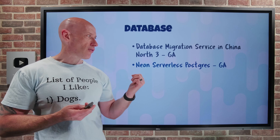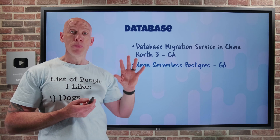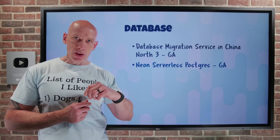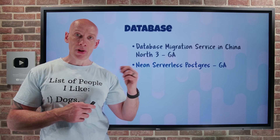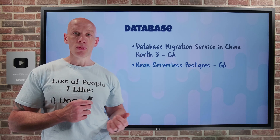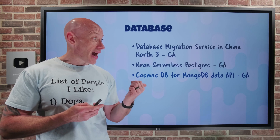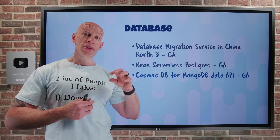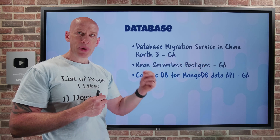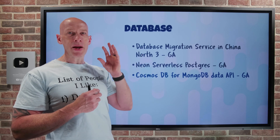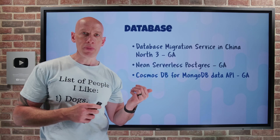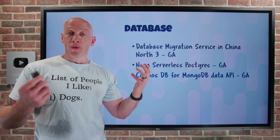The Neon Serverless Postgres is now in GA. As the name suggests, it's a serverless, modern, fully managed Postgres service developed through a collaboration between Microsoft and Neon. It makes it easy to spin up and manage Neon resources within the Azure portal, billing is all part of your Azure invoice, and it integrates with Entra ID for single sign-on. Additionally, Cosmos DB for MongoDB Data API is now GA for the vCore Cosmos DB for MongoDB. You can now use a RESTful interface over HTTP, so instead of needing regular database drivers and queries, any app that can talk REST can interact directly with Cosmos DB for MongoDB, making it much easier for developers to get up and running.